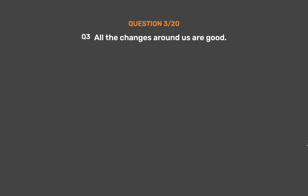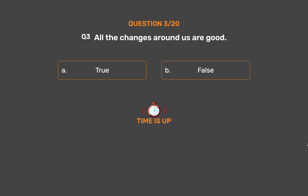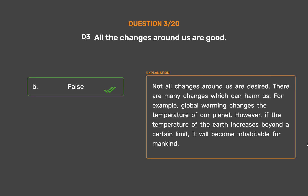Question number 3: All the changes around us are good. Option A: True. Option B: False. The correct answer is Option B, False. Not all changes around us are desired. There are many changes which can harm us. For example, global warming changes the temperature of our planet. However, if the temperature of the earth increases beyond a certain limit, it will become inhabitable for mankind.